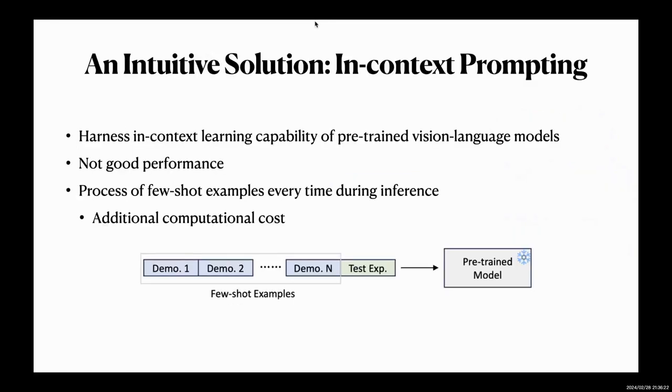An intuitive solution is to harness the in-context learning capability of pre-trained vision and language models. Though achieving good performance on other multi-modal tasks, the performance on few-shot hateful meme detection is not so ideal.